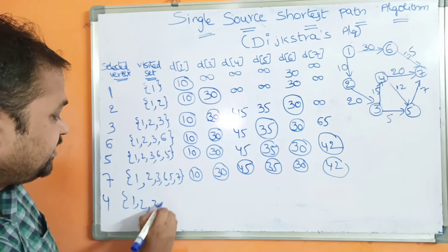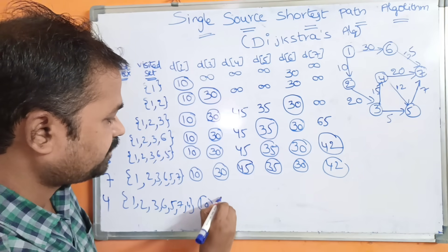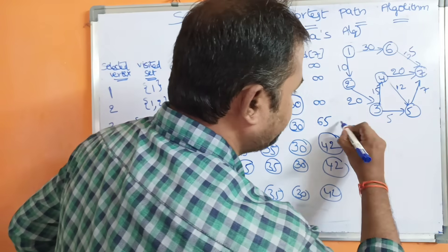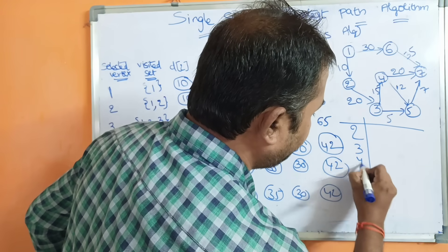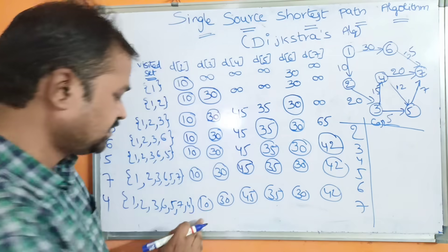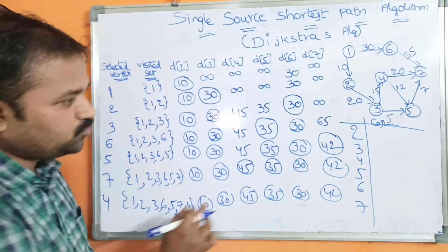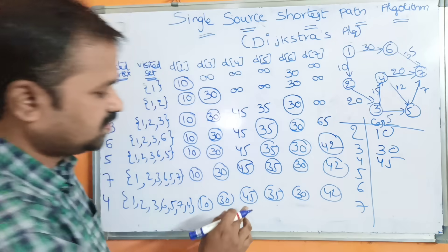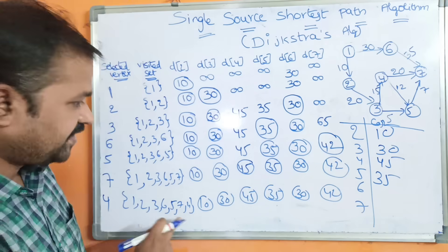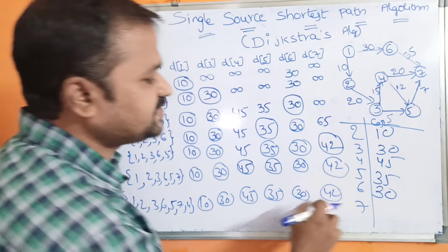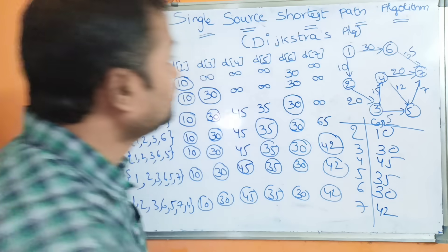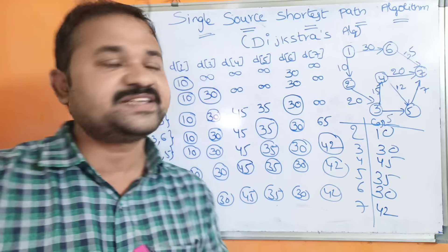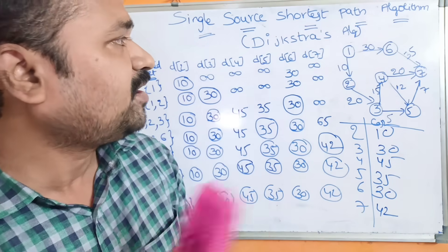The visited set is now {1, 2, 3, 6, 5, 7, 4}. So the final shortest distances from source vertex 1 are: cost from 1 to 2 is 10, from 1 to 3 is 30, from 1 to 4 is 45, from 1 to 5 is 35, from 1 to 6 is 30, and from 1 to 7 is 42. In this way, we can find out the shortest path from the source vertex to all other vertices using the single source shortest path algorithm, also known as Dijkstra's algorithm. In the next video, we will solve one more example.